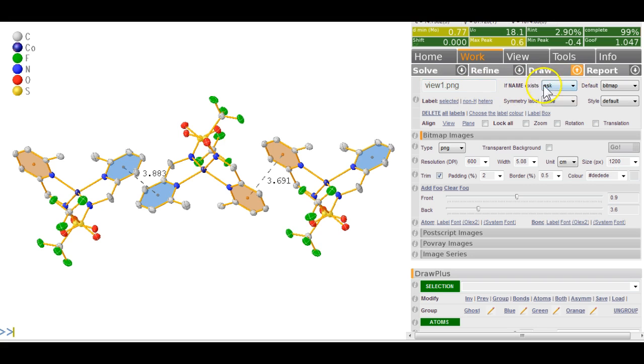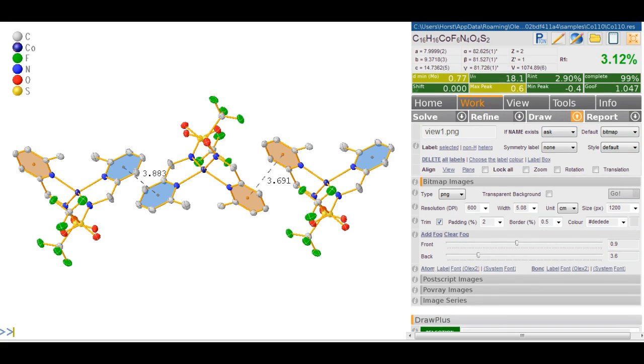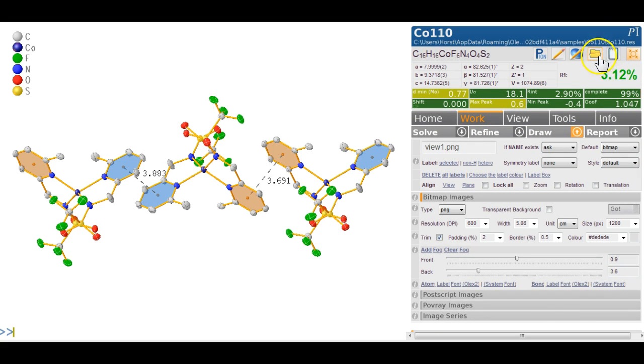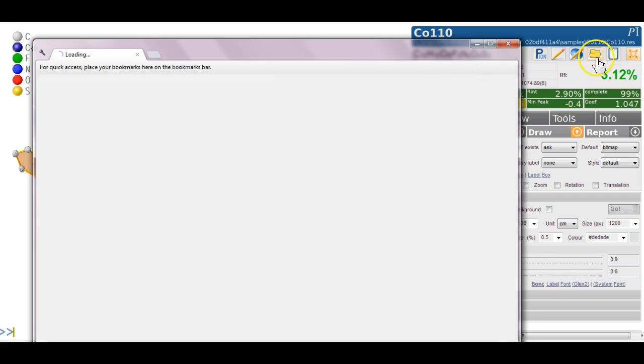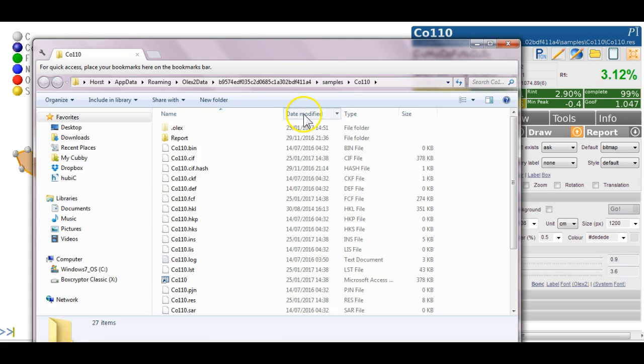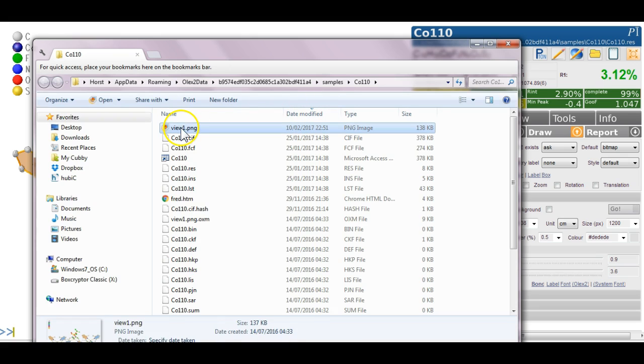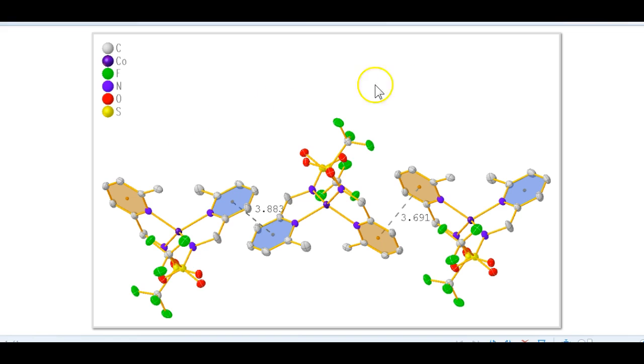And if the file name already exists, it will ask you whether you want to override it or what you want to do. If you click on the folder, then the latest in here should be our view of one PNG. And if you load that up, you see the picture that we have just made.